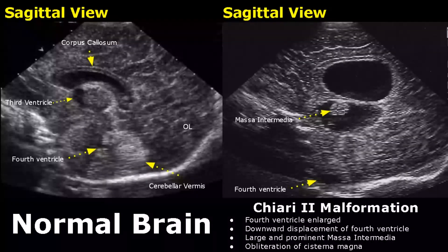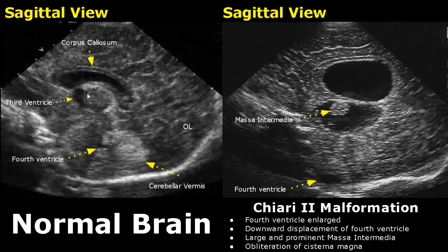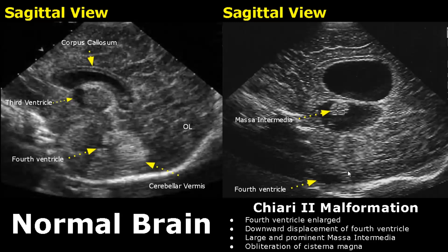Chiari 2 malformation has a number of features. There is downward displacement of the fourth ventricle and it is enlarged as well. The massa intermedia is a linking tissue between the thalamus and third ventricle — normally it won't be visualized, but in Chiari 2 malformation it can become enlarged and prominent. The third ventricle is also dilated. The cisterna magna is the space between the vermis and the posterior rim of the foramen magnum; in Chiari 2 malformation this space is closed — this is called obliteration of the cisterna magna.